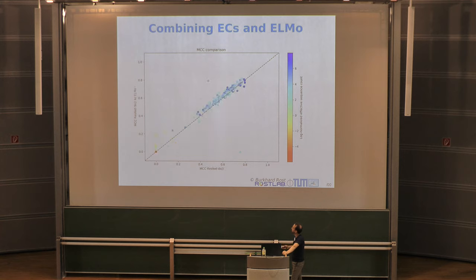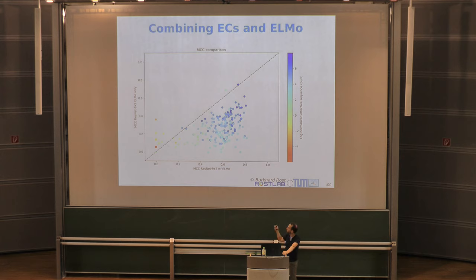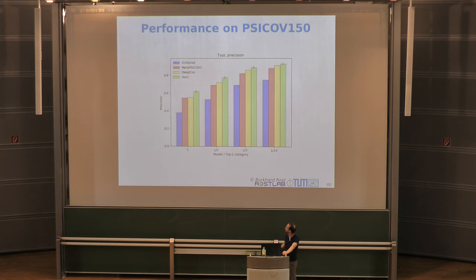If you train on ELMo only compared to a combined system, the combined system is still vastly superior. However, ELMo-only succeeds on a few samples where the combined network didn't. Upon further analysis, these turn out to be very bold predictions — the ELMo-only predictor predicts many positives with many false positives. This is exactly what we don't want, since false positives break the folding process. The ELMo-only predictor behaves as an overconfident, bold predictor, which is unfeasible for downstream 3D inference.